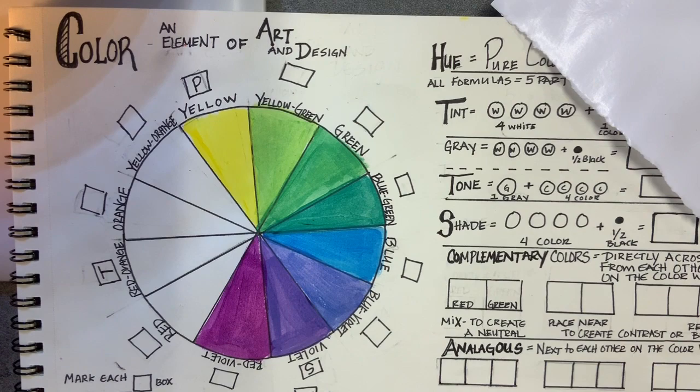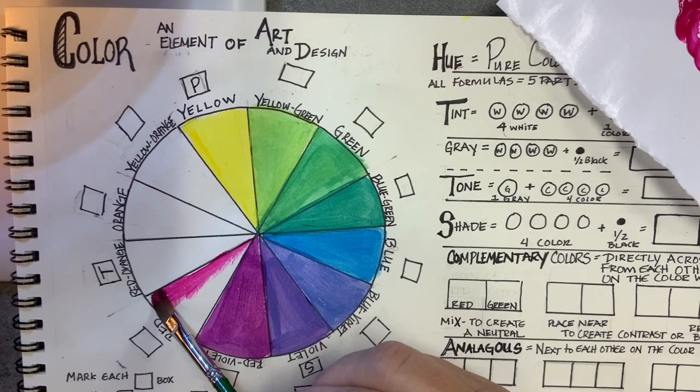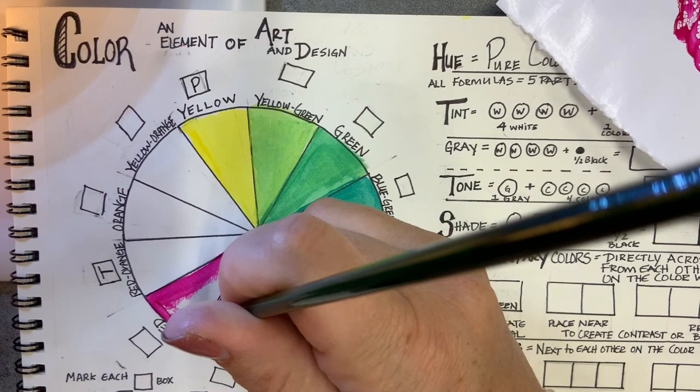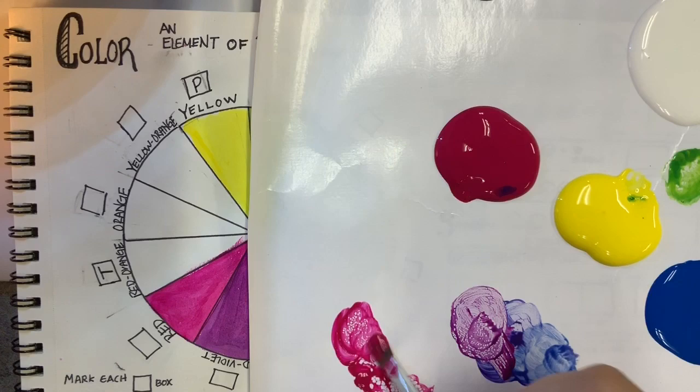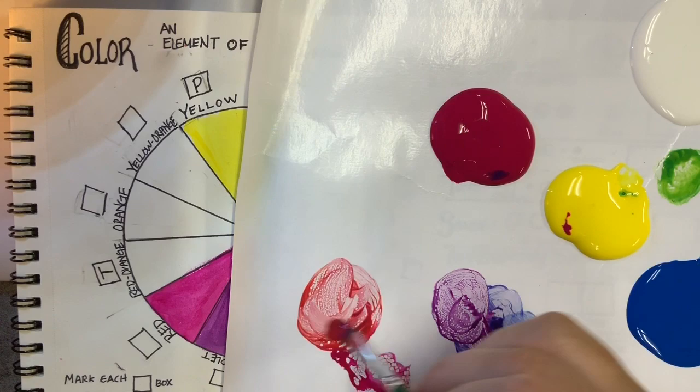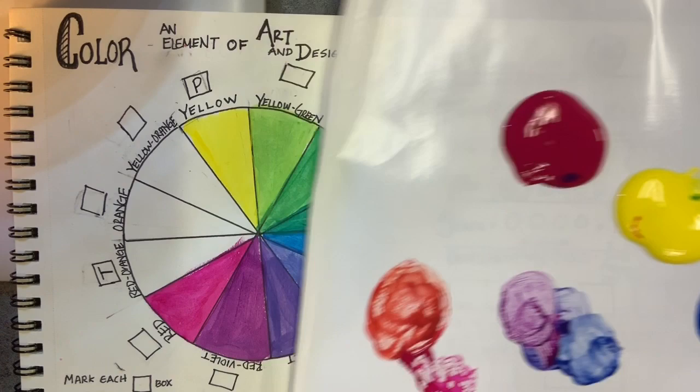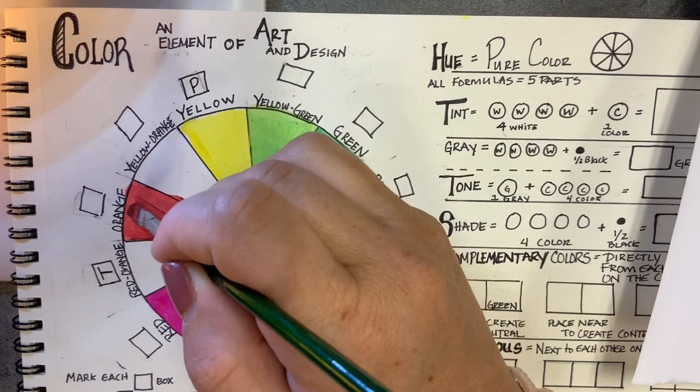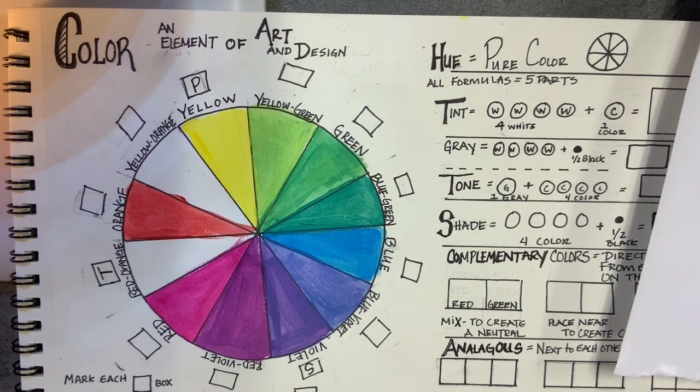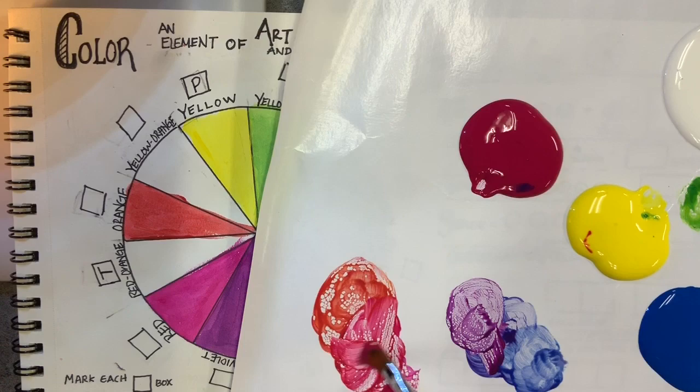And I'm rinsing my brush really good in between every time I use that brush. You can see I'm trying my best to stay in the lines, but it's okay if you go out of them a little bit. Now here with the red-orange, orange, and yellow-orange, I gotta say that it was really difficult to make that orange. I think I would have maybe tried to make it a little bit more different than the red-orange and the orange—it ended up to be pretty close.